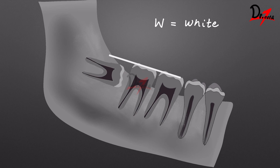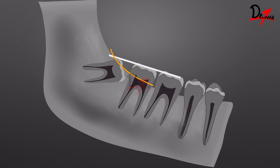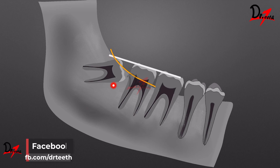Coming to the amber line. The amber line is drawn from the distal aspect of the third molar and it reaches the interdental septum between the second and the first molar. This line represents the margin of the alveolar bone that is covering the third molar, and it tells us about the amount of vertical bone that we need to remove for the extraction of the third molar.